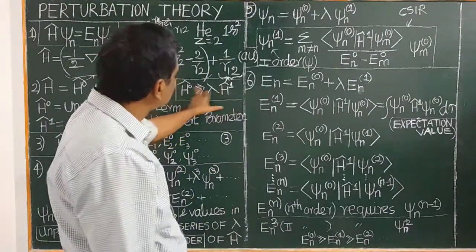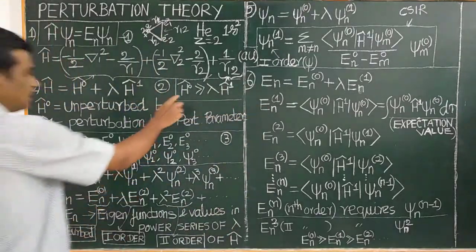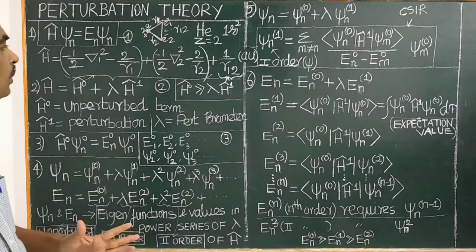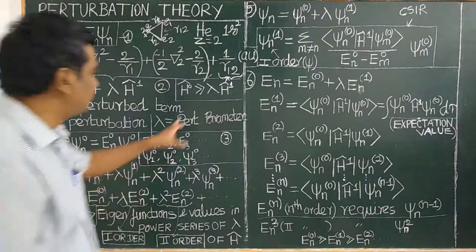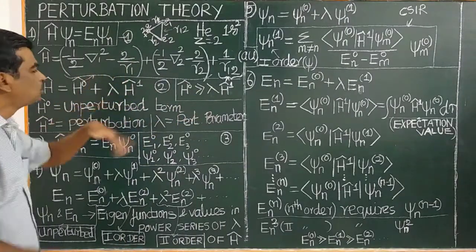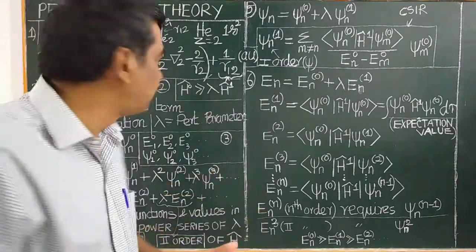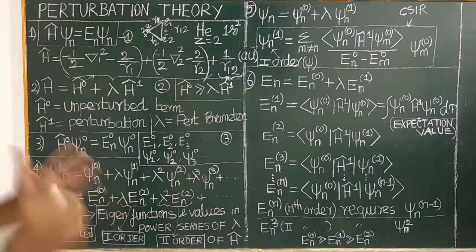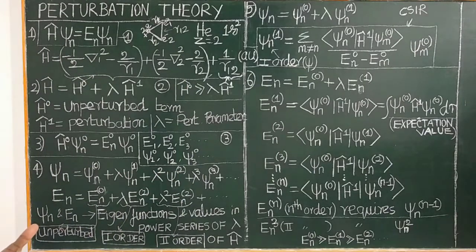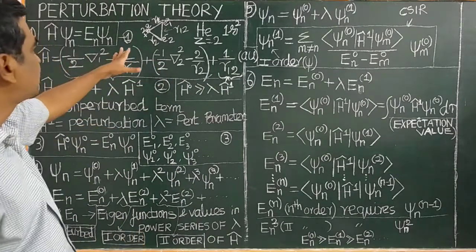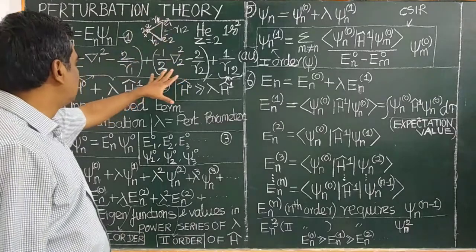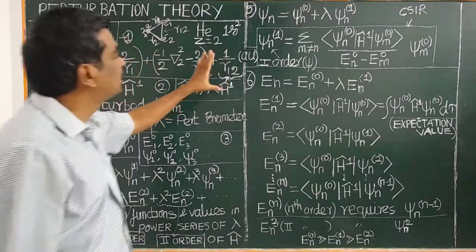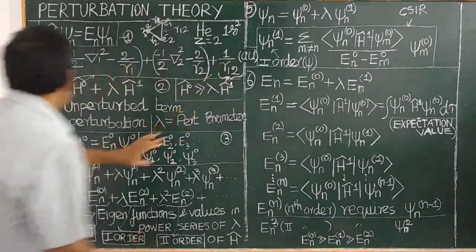Lambda is called the perturbation parameter. The perturbation term is smaller than the unperturbed term. If lambda equals one, the full perturbation is applied. If lambda equals zero, there is no perturbation term. We set lambda equal to one to apply the full perturbation and solve the Schrödinger wave equation for the helium atom.